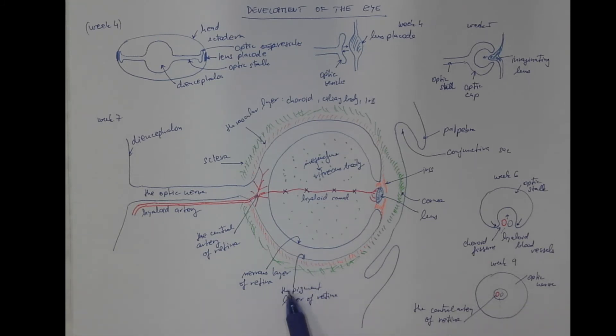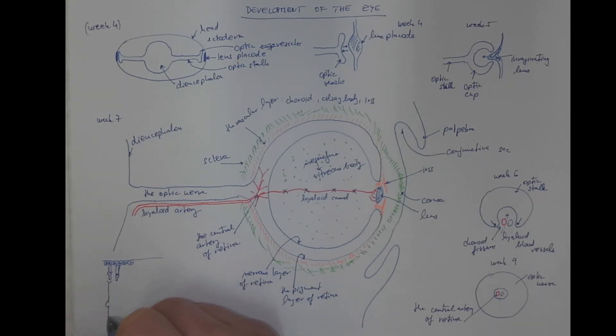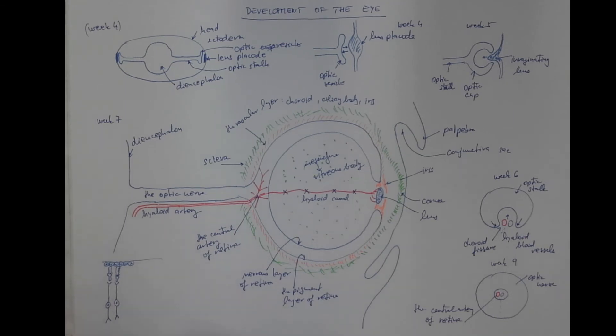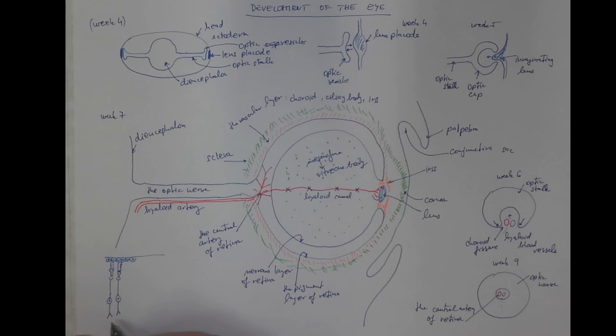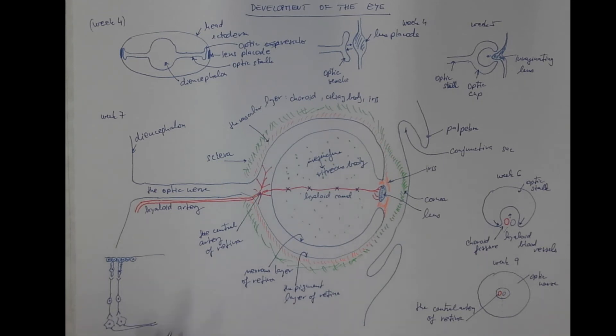One more note on the retina layers. If this is the pigment epithelium that has a shape of simple cuboidal epithelium, then the first layer of neurons would be the photoreceptors, the rods and cones. The second layer would be the bipolar neurons. And the third layer would be the ganglionic multipolar neurons, the axons of which form the optic nerve.